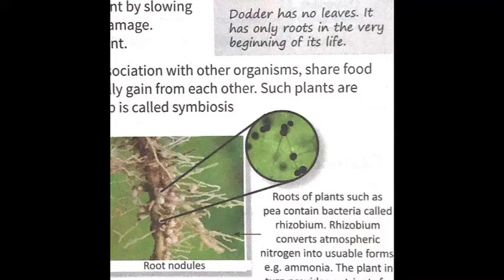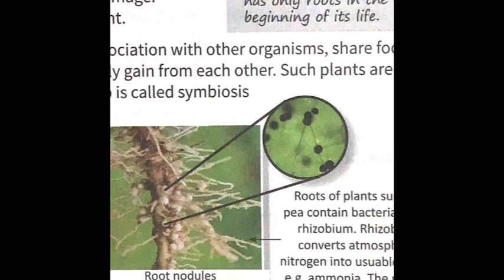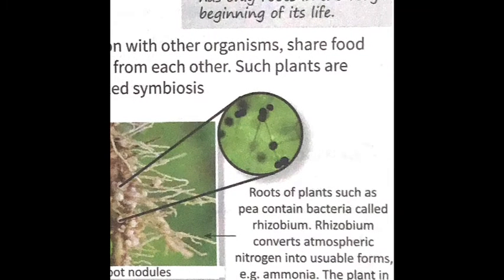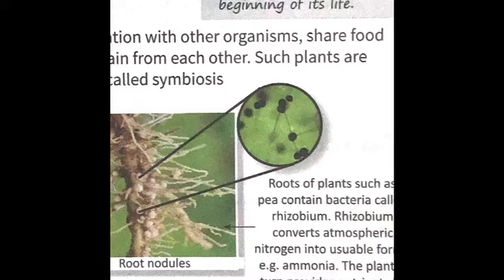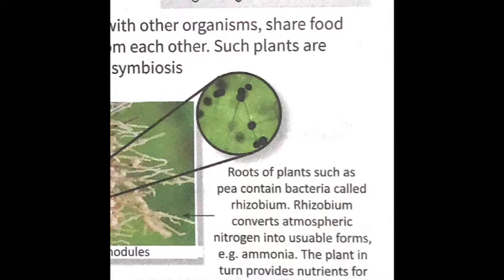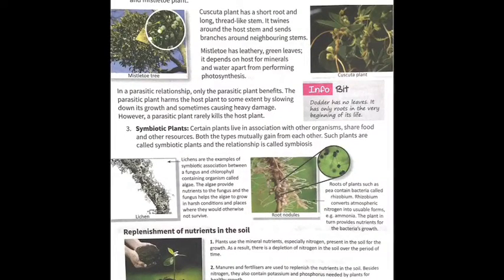Another example is root nodules. The roots of plants such as pea contain bacteria called Rhizobium. Rhizobium converts atmospheric nitrogen into a usable form — ammonia — which the plant absorbs. In turn, the plant provides nutrition for the bacterial growth. Both benefit each other.